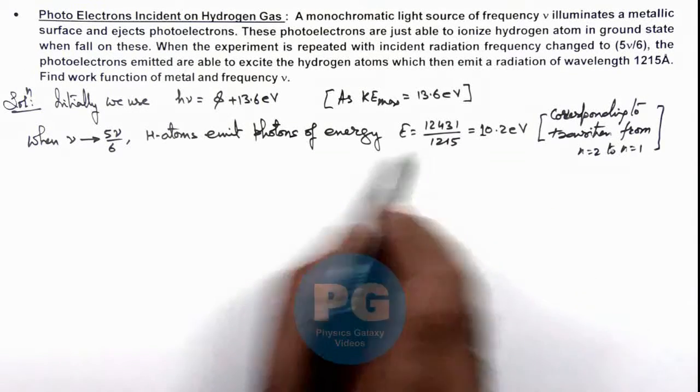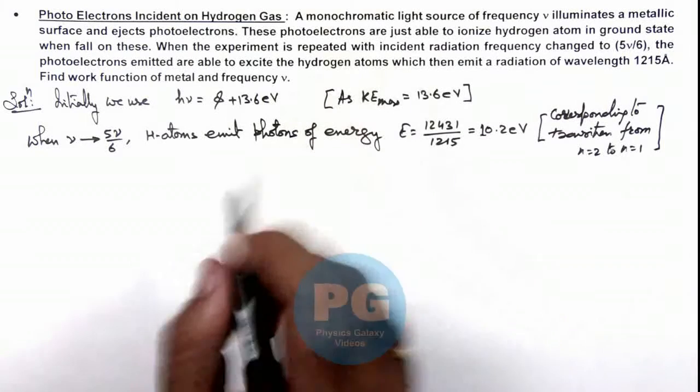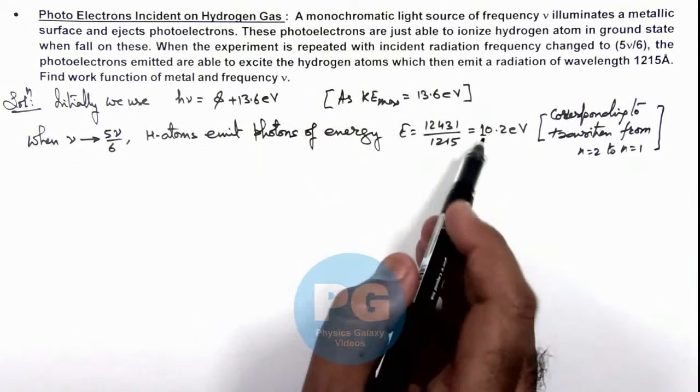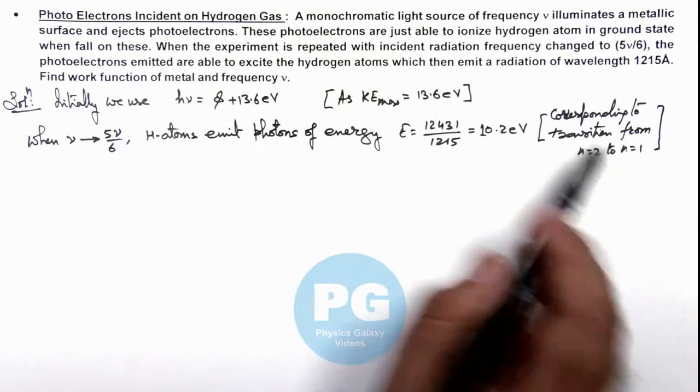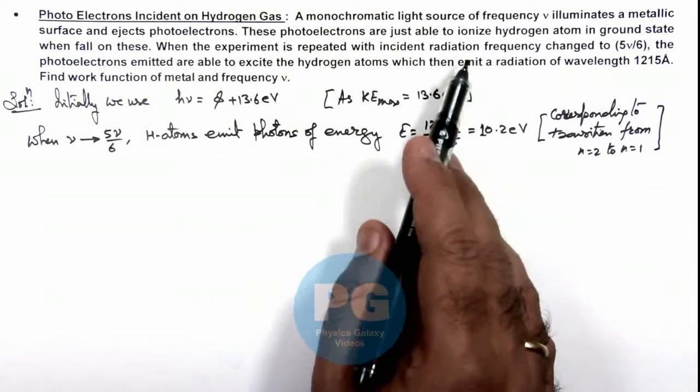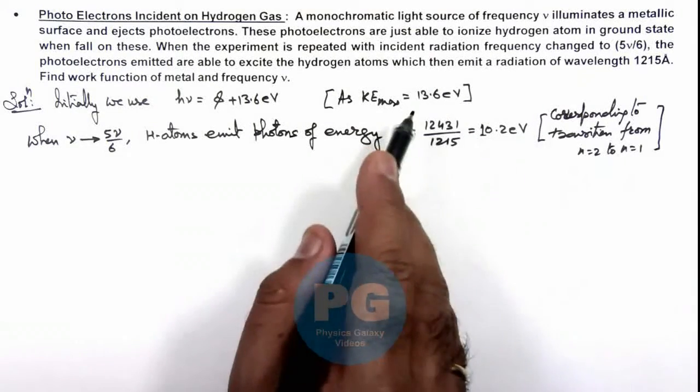So this is the transition which takes place when hydrogen atoms are excited by the photoelectrons. That means for transition 2 to 1, first electrons of hydrogen atoms must be excited from 1 to 2.